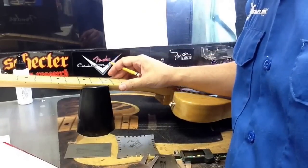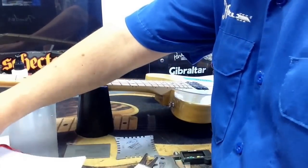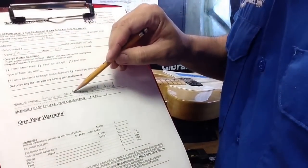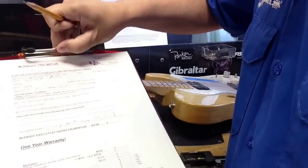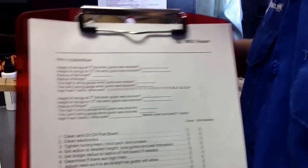The very first thing we do is look at what the customer notated on their sheet. In this case, the customer asked for a setup with a heavier gauge string put on the guitar, but there's no other special notes for us. We'll go to the basic back sheet.